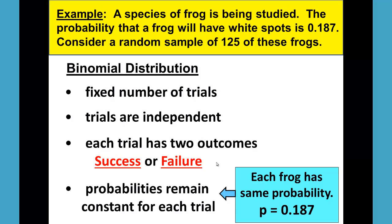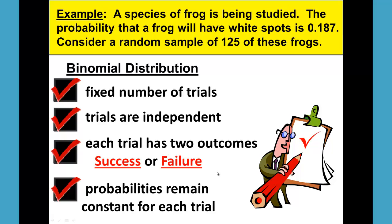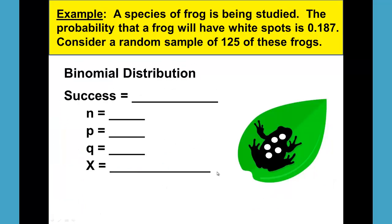Each frog has the same probability of p equals 0.187. So yes, the probabilities remain constant for each trial. And we have our four characteristics.